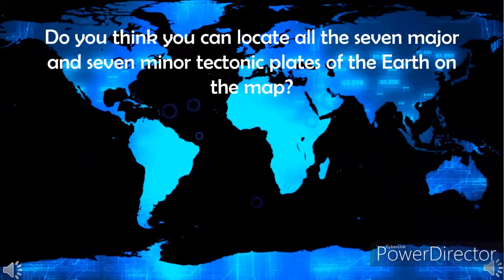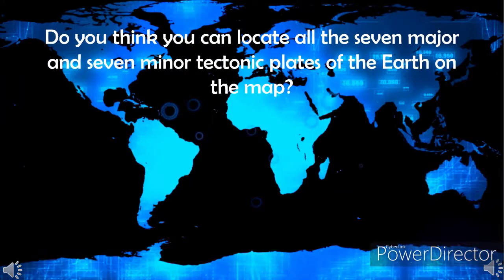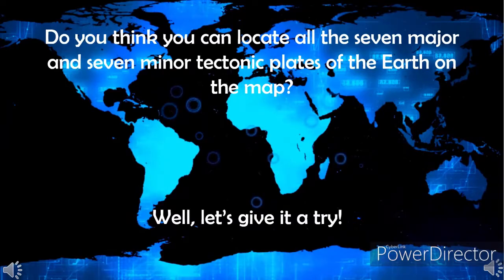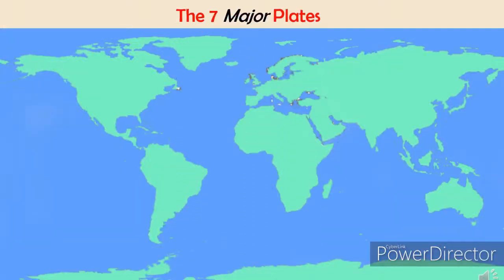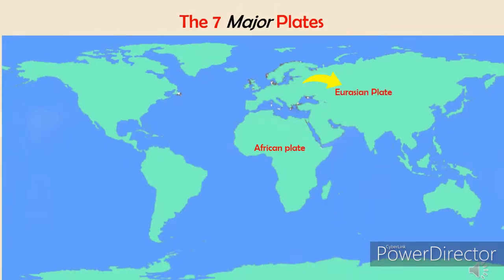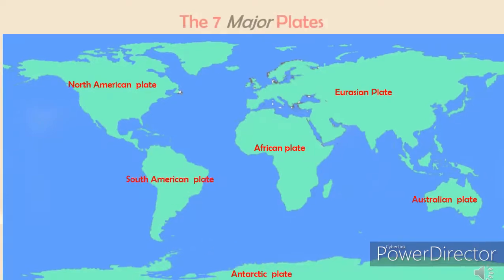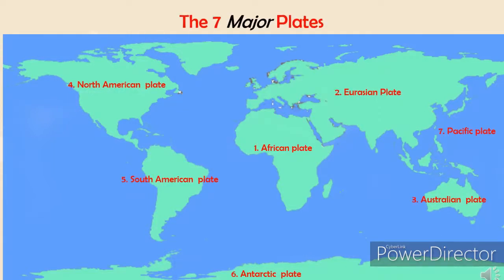Do you think you can locate all seven major and seven minor tectonic plates on the map? Let's give it a try! We will now locate the seven major plates: African plate, Eurasian plate, Australian plate, North American plate, South American plate, Antarctic plate, and Pacific plate. These are the seven major plates.